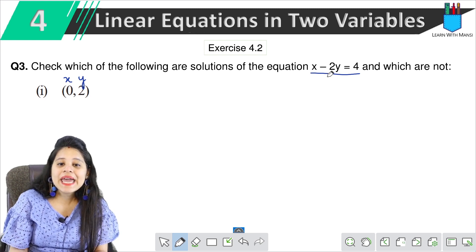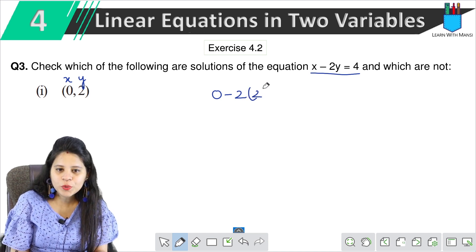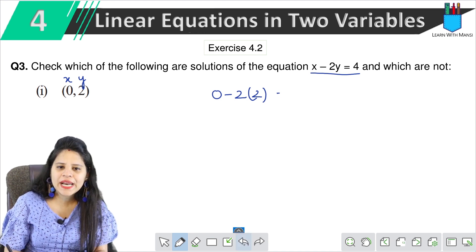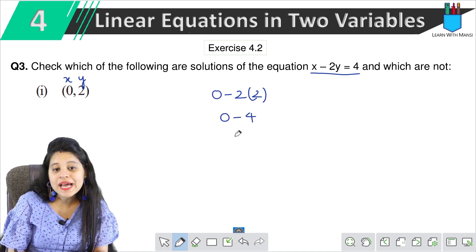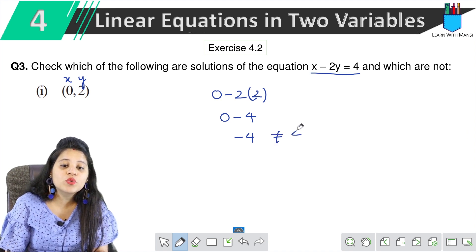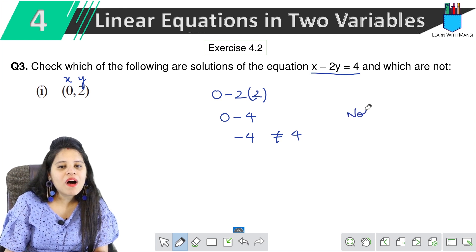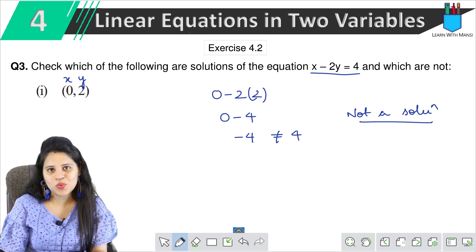So let's do it: where x = 0, minus 2, where y = 2, equals 4. Let's see if our answer equals 4. This is 0 minus 2 × 2 = 0 minus 4 = -4, which is not equal to 4. Therefore this is not a solution.